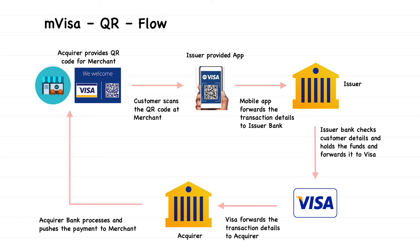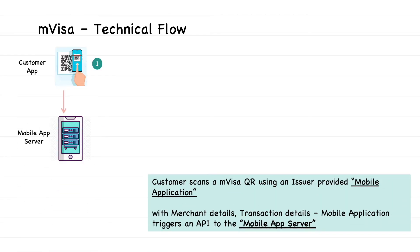This is a functional overview of a MVISA transaction. Now let's look at what happens behind the scenes technically. The first step is the customer scanning the QR code using a mobile application. This mobile application is provided to the customer by the issuer. The issuer also hosts a mobile application server, which is a server component of the mobile application. When the transaction is performed by the customer, the mobile application pushes all the merchant details and the transaction details to the mobile application server using an API.